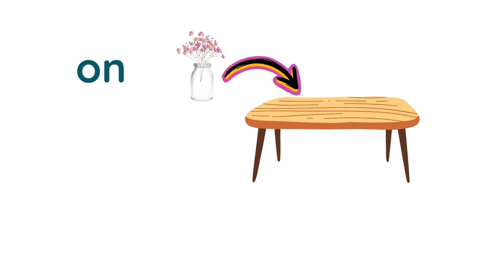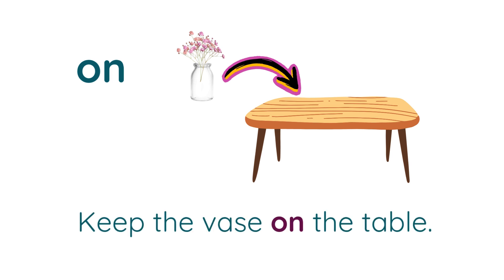The first preposition we are going to learn is 'on'. On enbathu meadu andra meaningla use panna padidu. For example: Keep the vase on the table — vase in a mese meadu beeyungal. I got onto the bus — naaan bus meadu eeri neen.